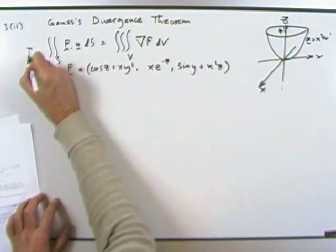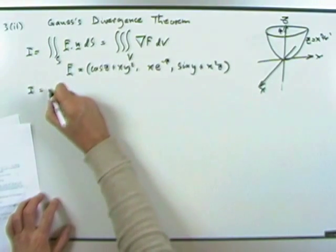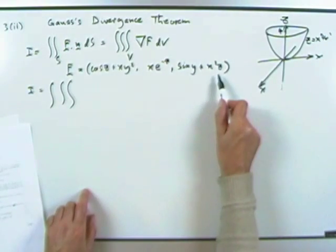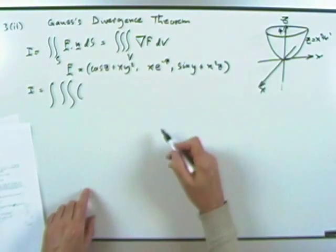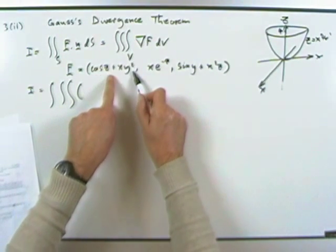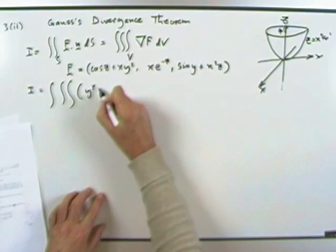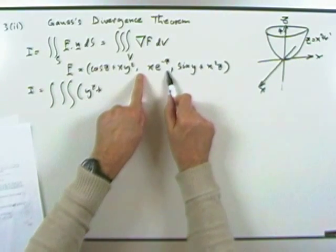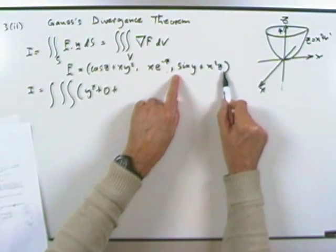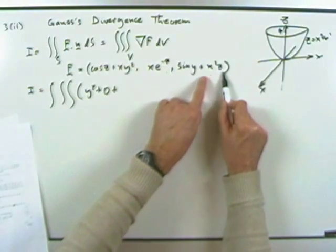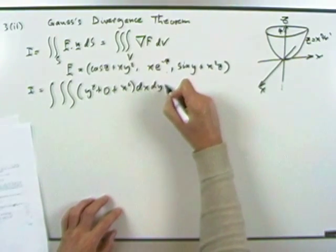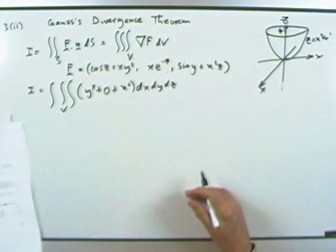So I need div F: differentiate the x-component with respect to x — that gives y²; differentiate the y-component with respect to y — nothing there; differentiate the z-component with respect to z — nothing there, but there's an x². So div F = y² + x², and I need to integrate that over the volume dx dy dz.